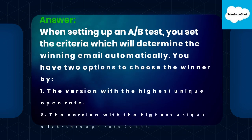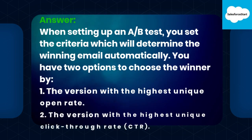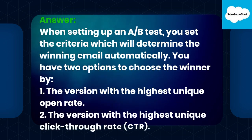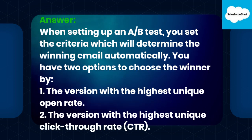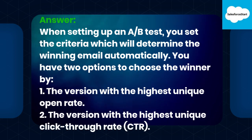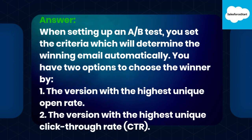Answer. When setting up an A/B test, you set the criteria which will determine the winning email automatically. You have two options to choose the winner by: 1. The version with the highest unique open rate. 2. The version with the highest unique click-through rate.